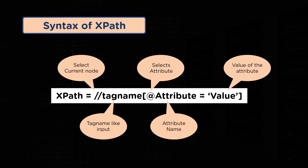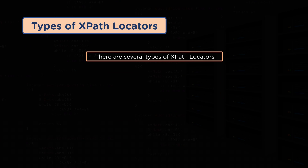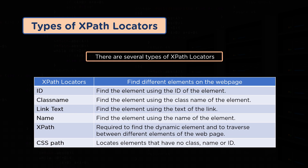Next, before we move on to the types of XPath, let's first see the types of XPath locators. XPath is used to locate web elements based on its XML path. The term locator refers to an address that identifies a web element uniquely within the webpage. These locators are HTML properties of a web element, which tell Selenium about the web element it needs to act on. The first type of XPath locator is the ID — the best and most popular method to identify web elements — and obviously each element's ID is unique.